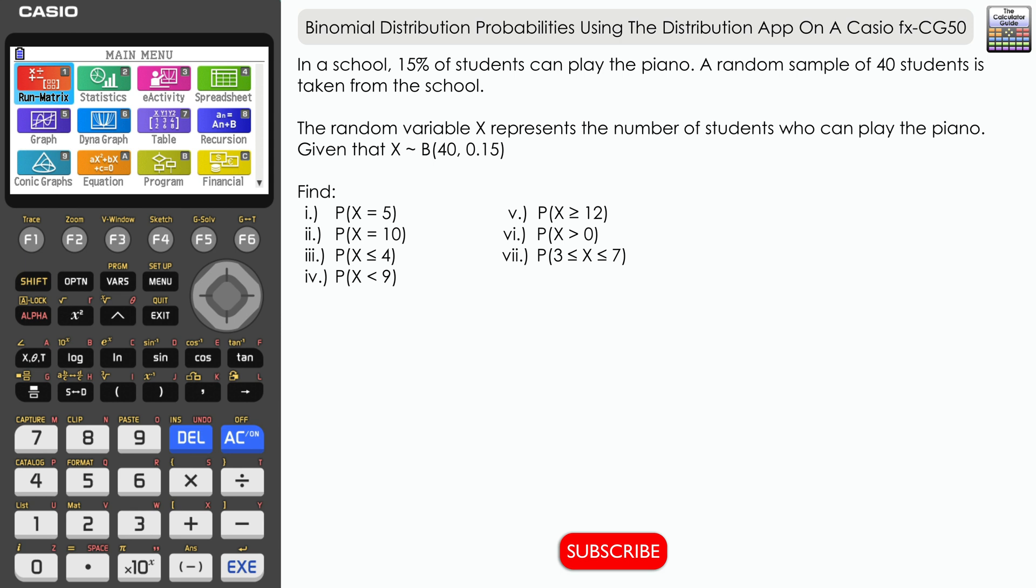The random variable X represents the number of students who can play the piano, given that X is distributed binomially with n equals 40 and a probability of 0.15. You can see there that probability is 15% represented as a decimal.